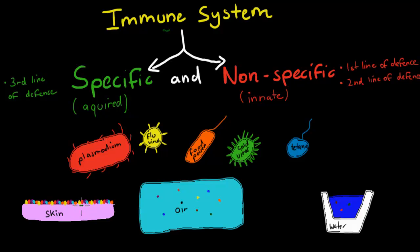For example, on our skin, they will be in the air as well, so they can get into our body through the air or through the nose. They can get into our body from water that we drink. There's pathogens all over the place. These could be, for example, the plasmodium protozoa, the flu virus, a bacteria that causes food poisoning, a virus that causes the cold, or a bacteria that causes tetanus.